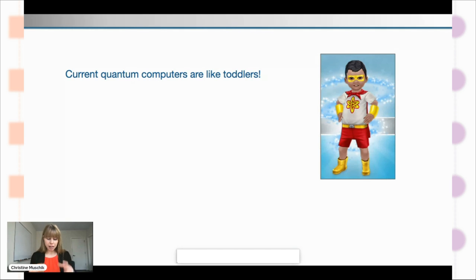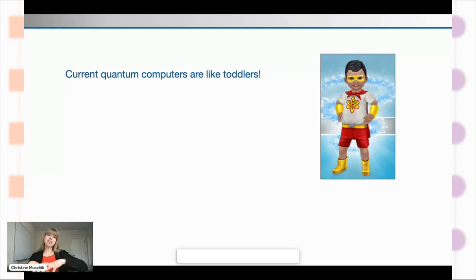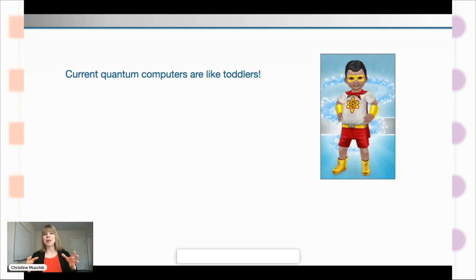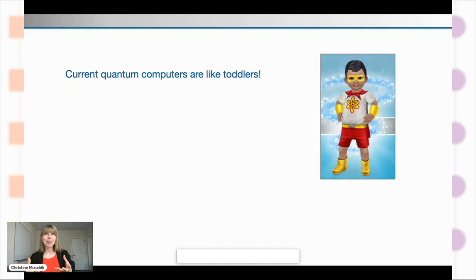Let me explain what I mean by hybrid quantum-classical simulation and why my group is really focusing on developing new methods for it. These algorithm design elements we apply for problems in particle physics, but they're applicable in a much wider sense even. What is the rationale behind this? The current quantum computers we have in our labs today are very much like toddlers or super-toddlers — endowed with superpowers in principle, but also small and quite sure to make errors.